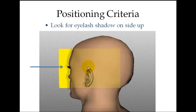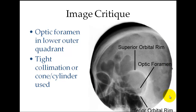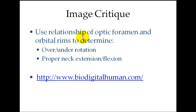You want to look at the central ray — this is about where it would enter. I tried to draw a collimated field here; the orbit side down is going to be right about here. You could call it even tighter than that. For image critique, we have the optic foramen in the lower outer quadrant — you should be visualizing its position within the orbit. Use tight collimation: a cone or cylinder would be ideal, or a five-by-five or six-by-six collimation field. Use the relationship between the optic foramen and the orbital rims to determine over- or under-rotation, or proper neck flexion or extension.